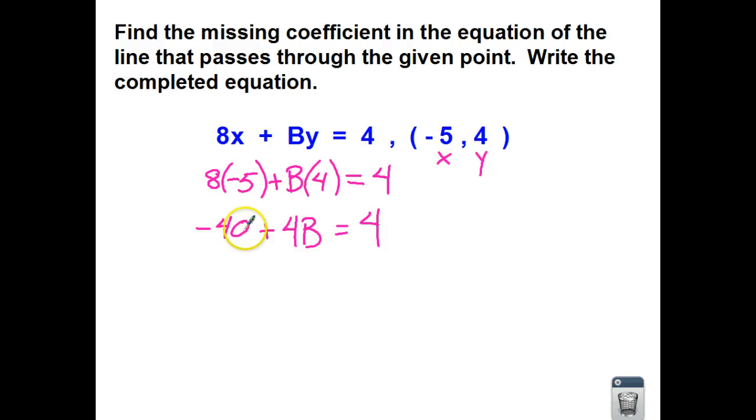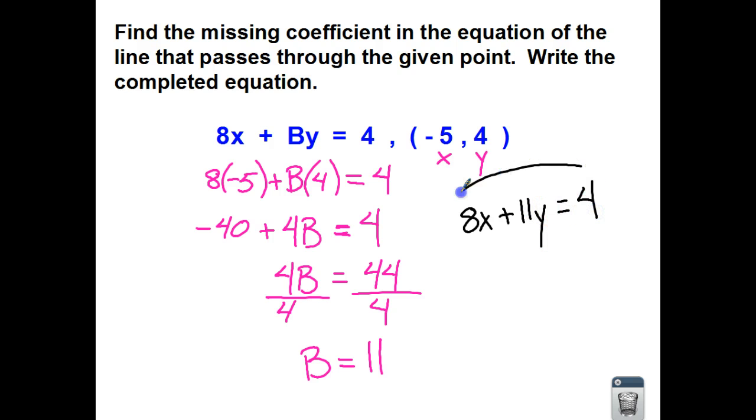And now, if we're solving for our variable, we know that we need to get our like terms together. So let's bring our negative 40 to the right side of the equal sign. So that's going to look like positive 4 added to 40, which is 44. Divide both sides. And you know that your B coefficient is 11. And now we take all of that information and put it into standard form. So we have 8x. Our B is now positive 11, equaling our C.